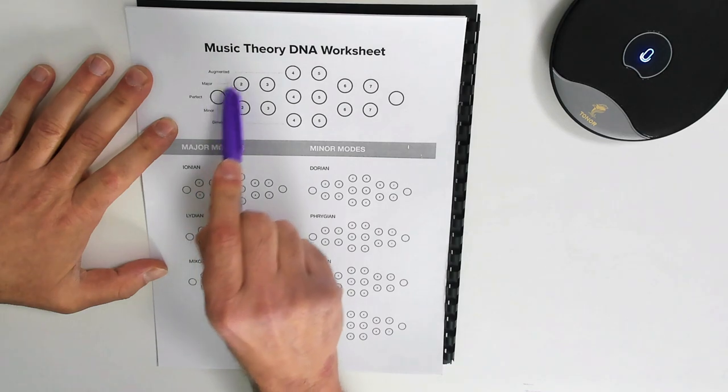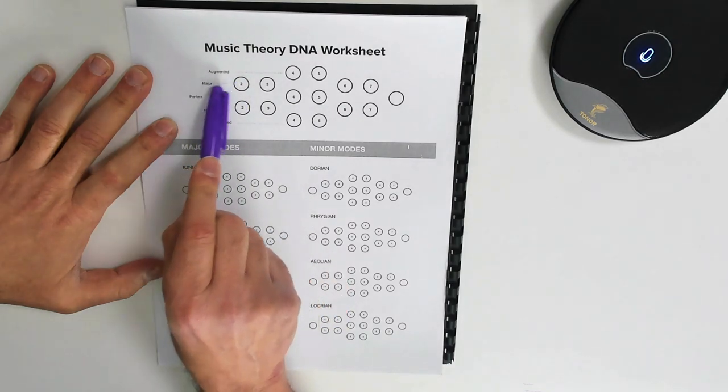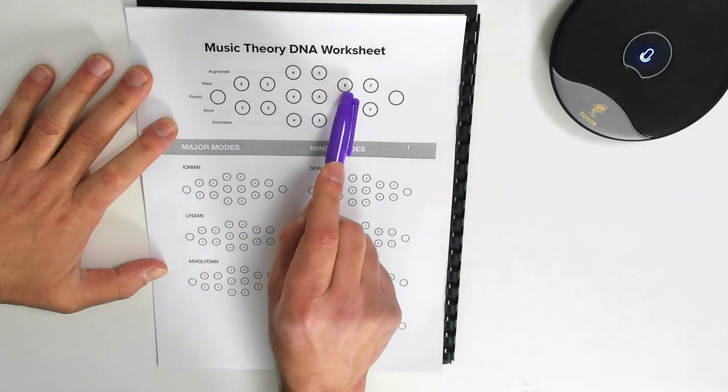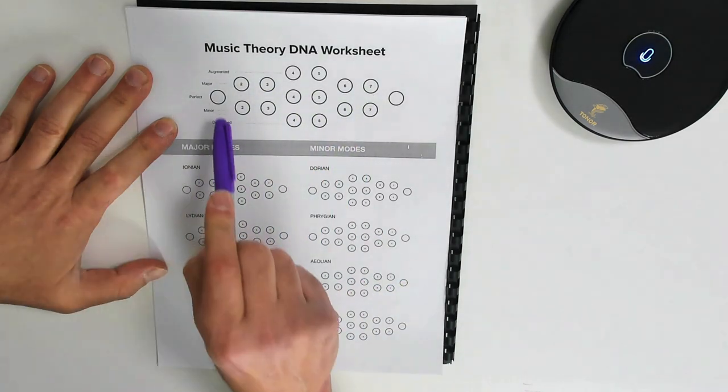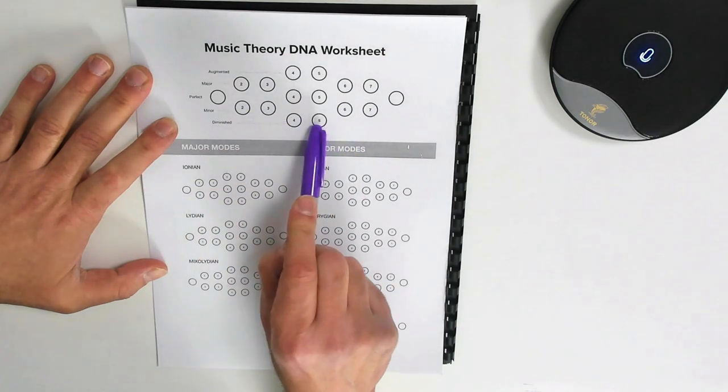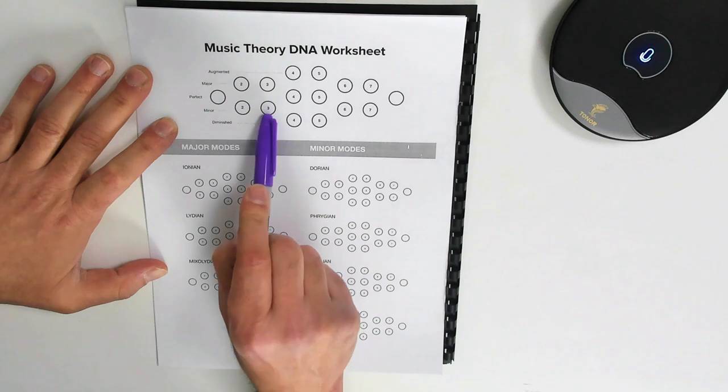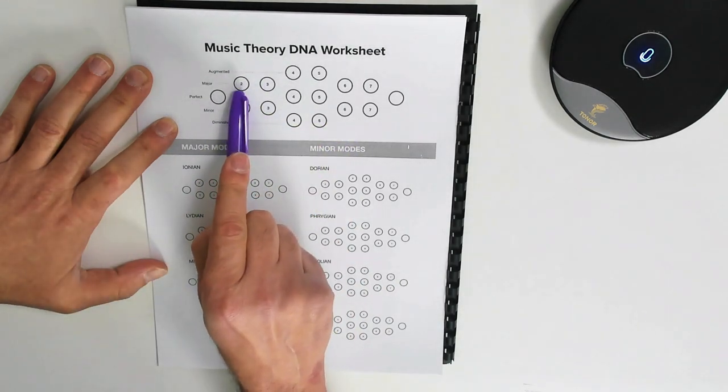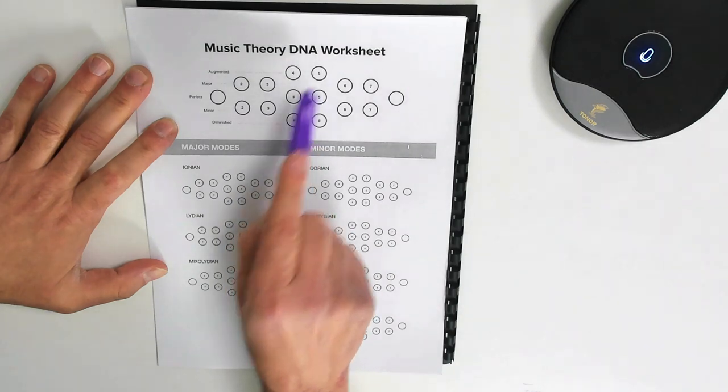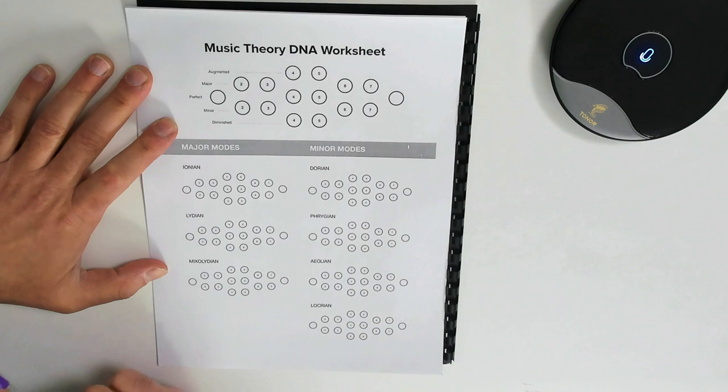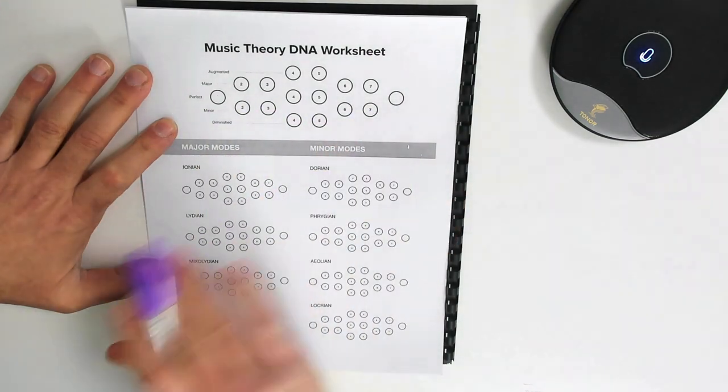All right, the line above here is for major. So anything that crosses this line is going to be major. So we have a major second, major third, major sixth, and major seventh. The line below the perfects is for minor intervals. Intervals, columns, same thing. So we have minor second, minor third, minor sixth, minor seventh. And then above the major, we have augmented. That's the fourth and the fifth. And diminished, the fourth and the fifth also. You have everything you need now.